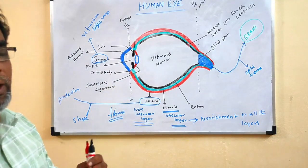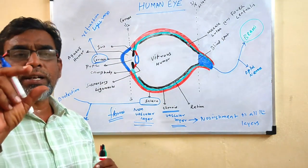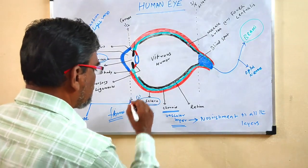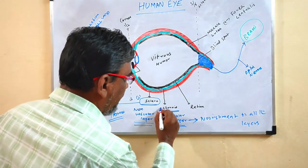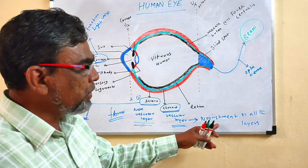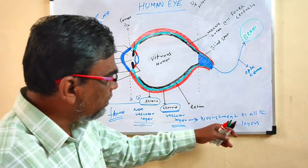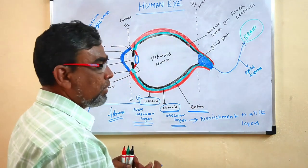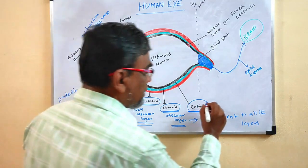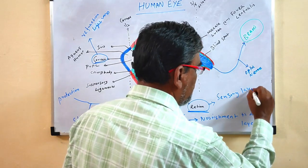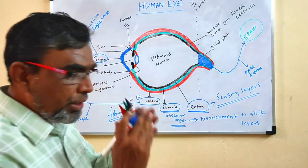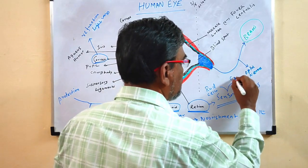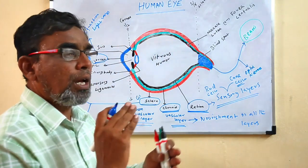To recap: the eyes are spherical and located in orbits of the skull. The eye is covered with three layers. The first is sclera, the outermost layer. The second is choroid, a vascular layer that gives nourishment to all layers and has many blood vessels. The third is retina, the most important layer, called a sensory layer because it contains rod cells and cone cells.